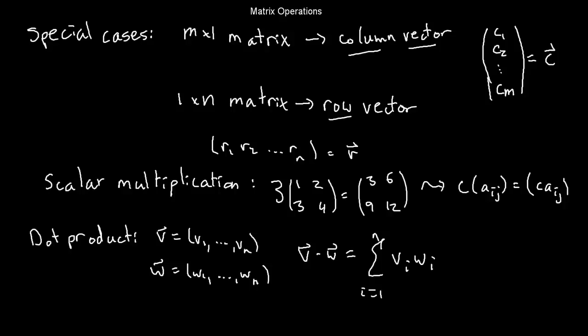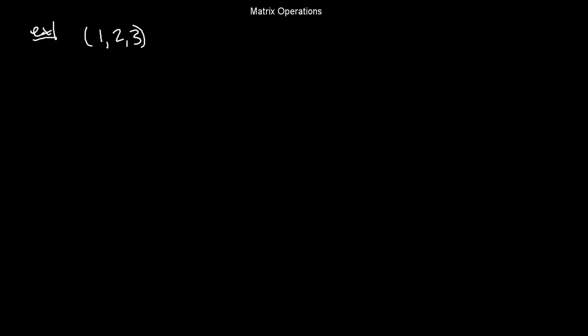So let's do an example of dot products. So, a 2, 3 vector, say 1, 2, 3, dot product with 1, 0, minus 1 third. So what I get is the first entry times the first entry, 1 times 1, plus 2 times 0, plus 3 times minus 1 third. Dot product of two vectors is a number. In this case, 1 minus 1 is 0.